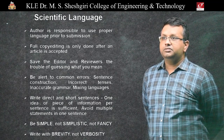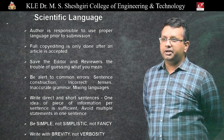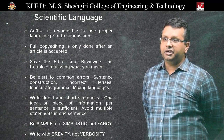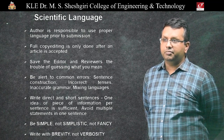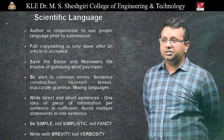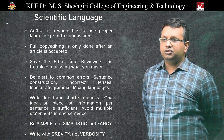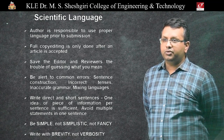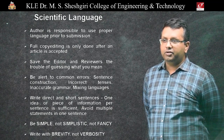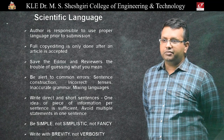In regard to scientific language, the author is solely responsible for using proper language prior to submission. Full copy editing is done by journals only upon acceptance of the article. One must save the editor and reviewers the trouble of guessing what the author means. Common mistakes to avoid include poor sentence construction, incorrect tenses, inaccurate grammar, and mixing of languages. Use direct and short sentences — one idea or piece of information per sentence — and avoid complicated statements. Overall, be simple, not simplistic. Being fancy is not required. Write with brevity, not verbosity.